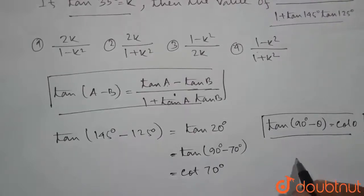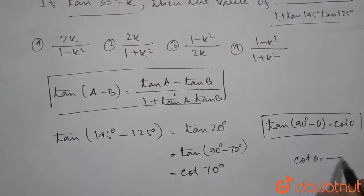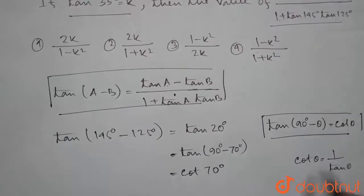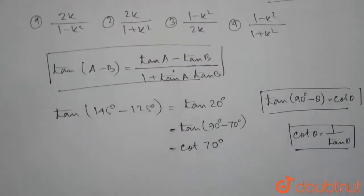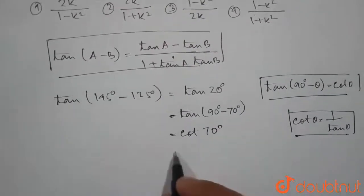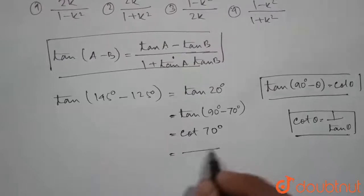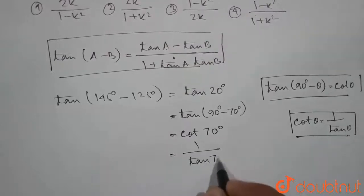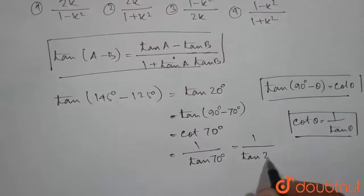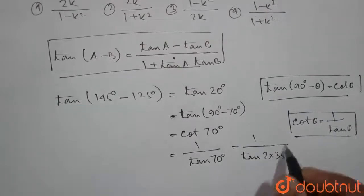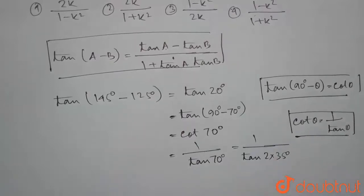Again, we know that cot of theta is equal to 1 by tan theta. So applying this formula to this one, we can write cot of 70 degrees as 1 by tan 70 degrees, which is equal to 1 by tan 2 into 35 degrees, because 2 into 35 is 70 degrees.